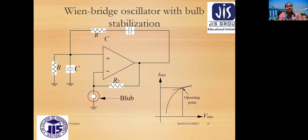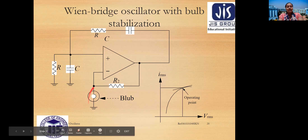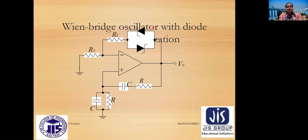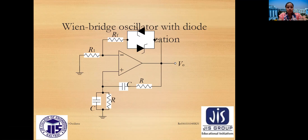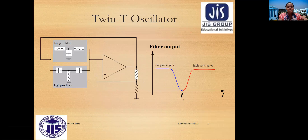The Wein bridge oscillator with bulb stabilization uses a bulb as a load element. For diode stabilization, two anti-parallel connected Zener diodes are used. The twin-T oscillator connects two low-pass filters in T-model and one high-pass filter in T-model together with the oscillator circuit.